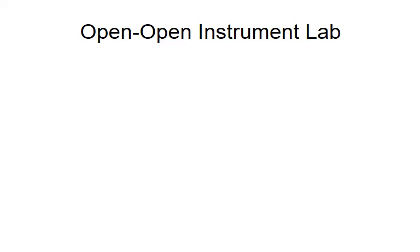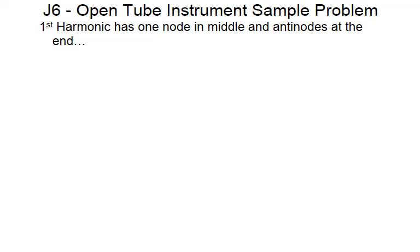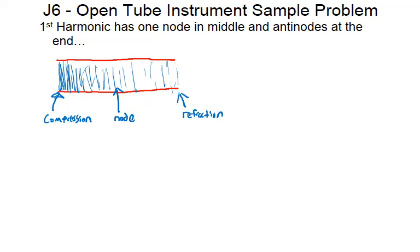When we talk about open-open typed instruments, this is where it's open on both sides — an air column open on both ends. Instruments like flutes fall under this category; we blow air through the instrument to produce sound. We can draw out an open air column with compressed air on one side and rarefaction on the other side, with a node in the middle — that's the first harmonic.